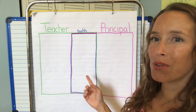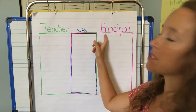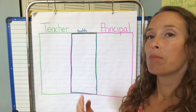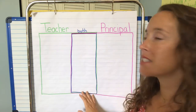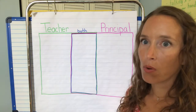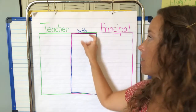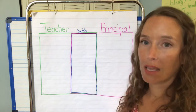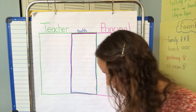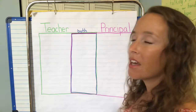Today we're going to use this Venn diagram to compare teachers and principals. A Venn diagram takes two things, compares them, and then in the middle you think about what's the same in your two categories. So we're going to talk about the roles of teachers and the roles of principals — what they do — and also things that might be the same about both.